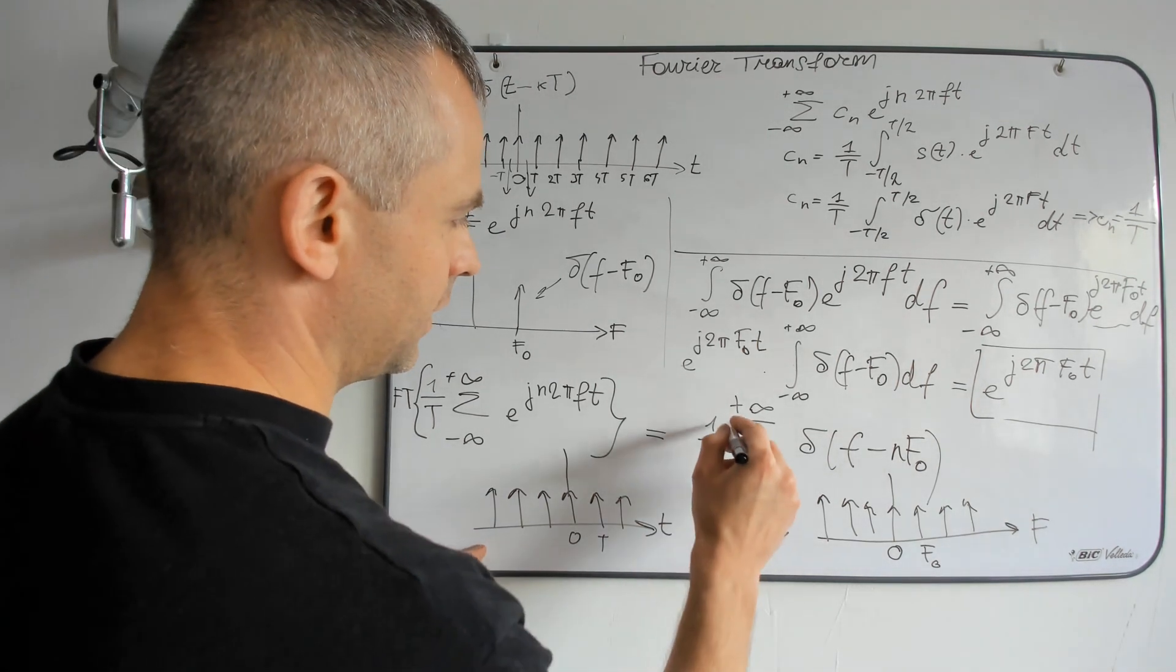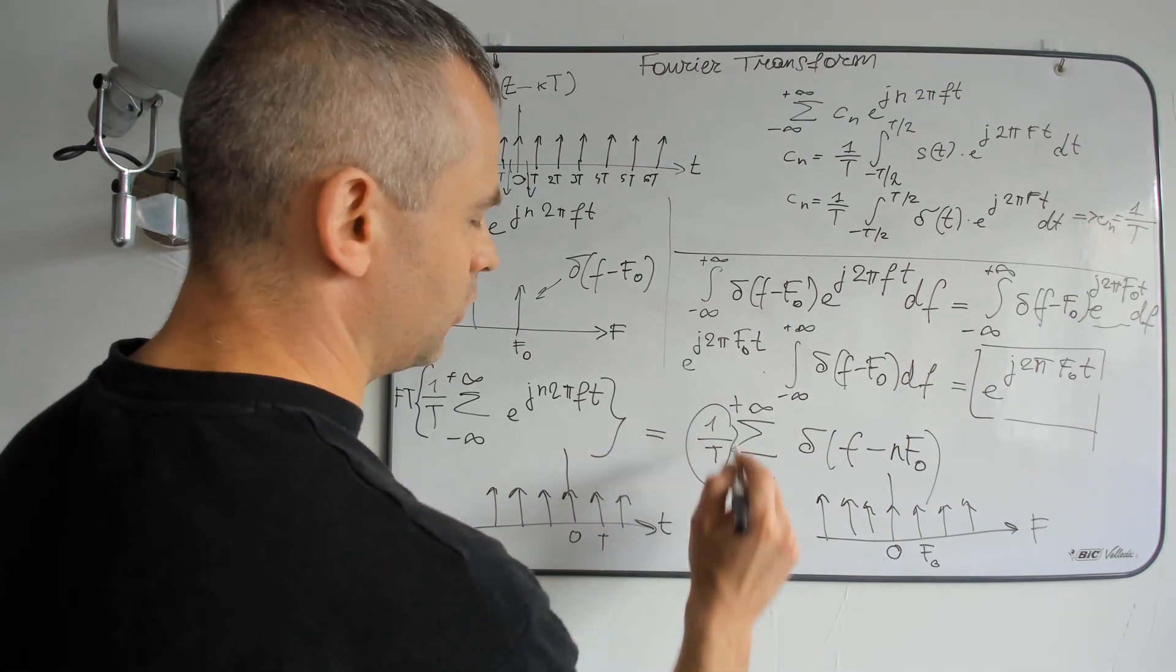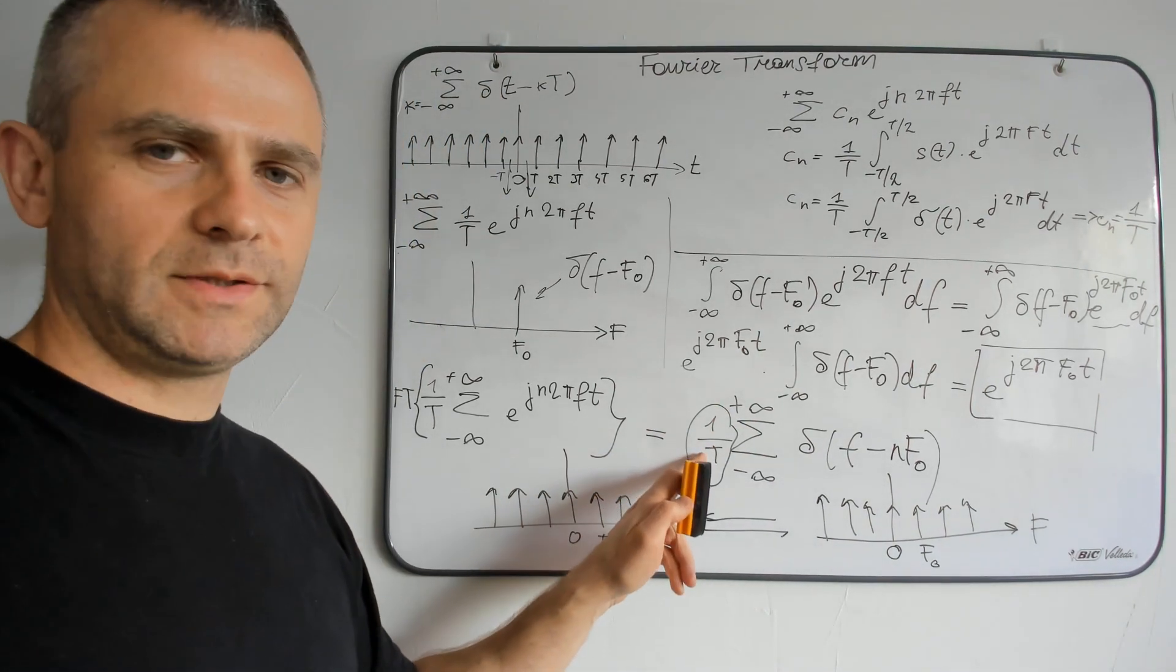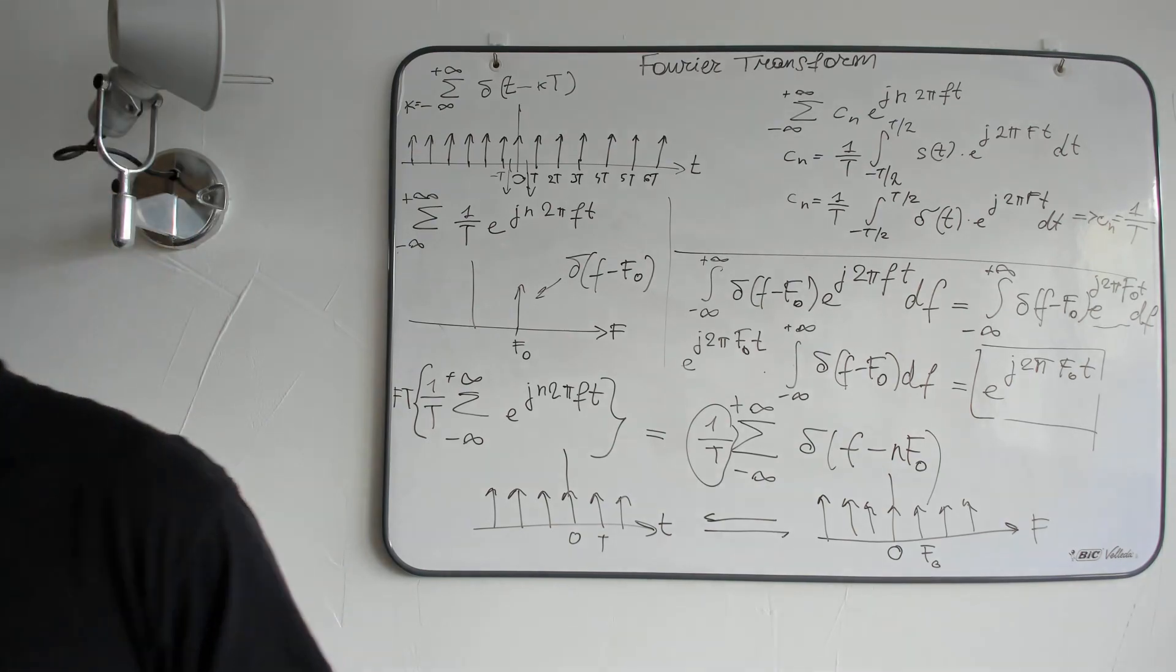Here step is f0, here step is T. Oh yeah, don't forget, don't forget 1 divided by T. Thank you.